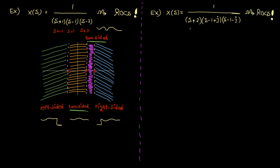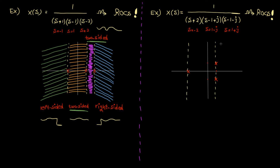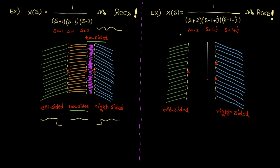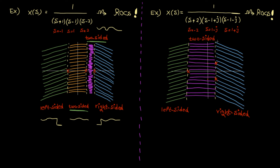In the next example, X(s) is given and we again find all possible ROCs. There is one real pole at minus two and two complex poles at one minus j and one plus j. Plot them and draw vertical lines on the poles. There are three possible ROCs: a left-sided ROC corresponding to a left-sided signal, a right-sided ROC corresponding to a right-sided signal, and a ROC bounded by poles corresponding to a two-sided signal.